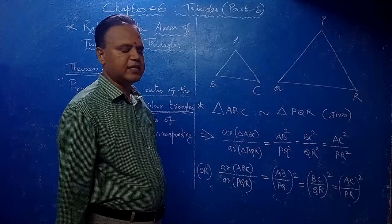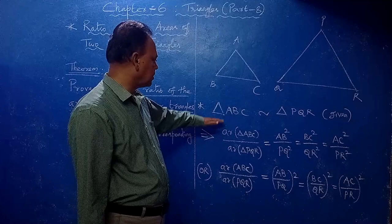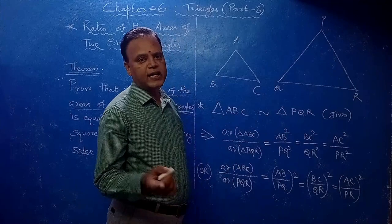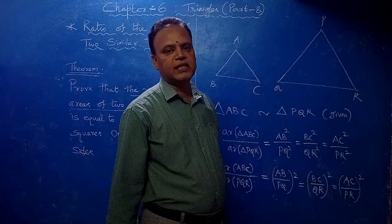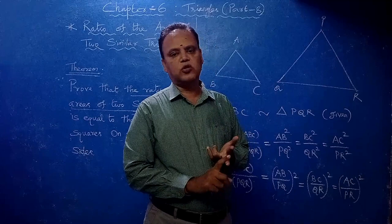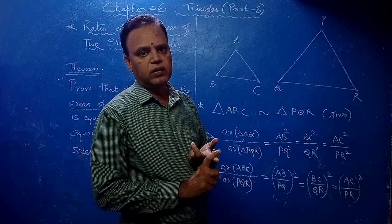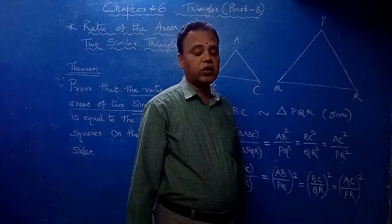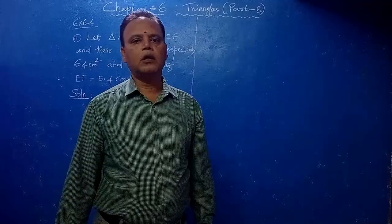Understand — this result is very very important. Two triangles similar means immediately you can write like this. Two triangles are similar means two conditions: all corresponding angles are equal and all corresponding sides are proportional. Plus, if area is involved, this result you have to use.